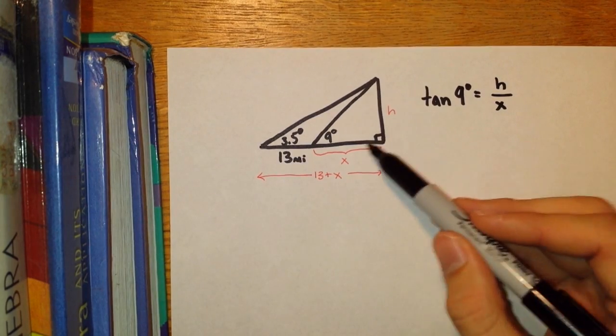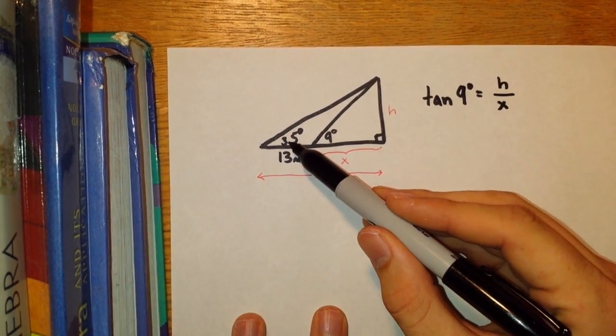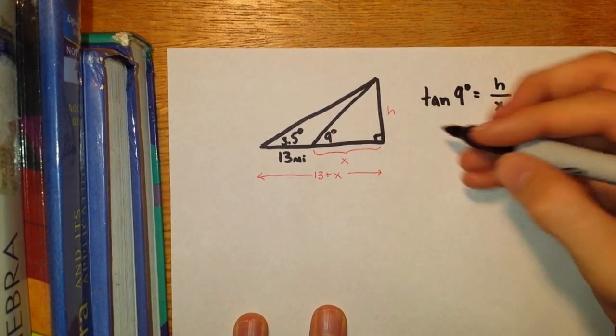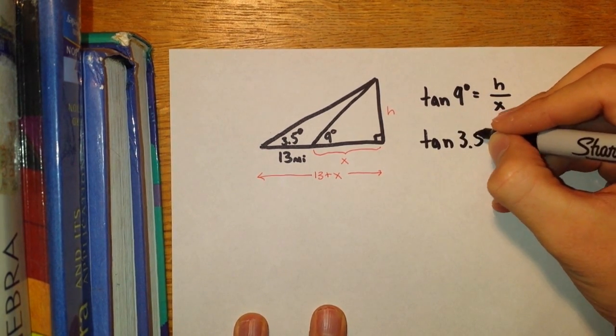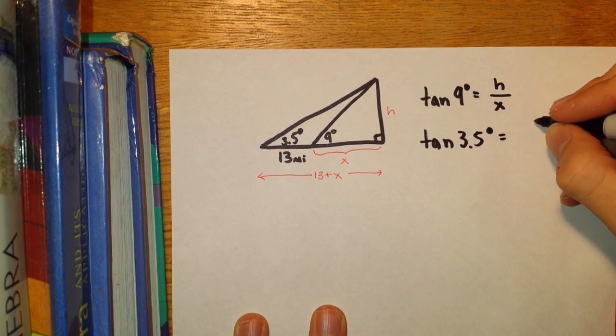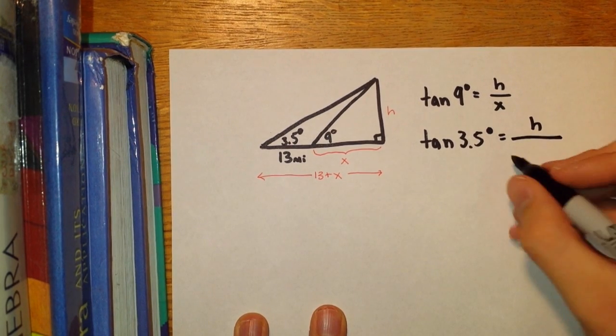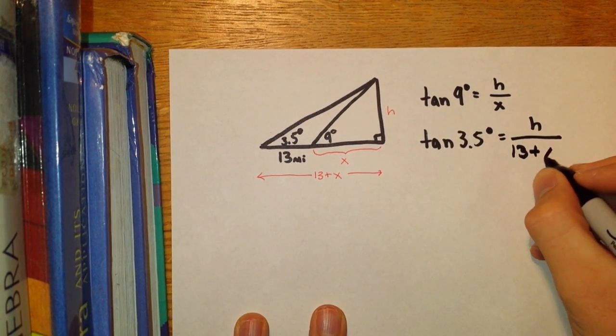In the much larger triangle, the 3.5 degree triangle, we're going to write that the tangent of 3.5 degrees equals H divided by 13 plus X.